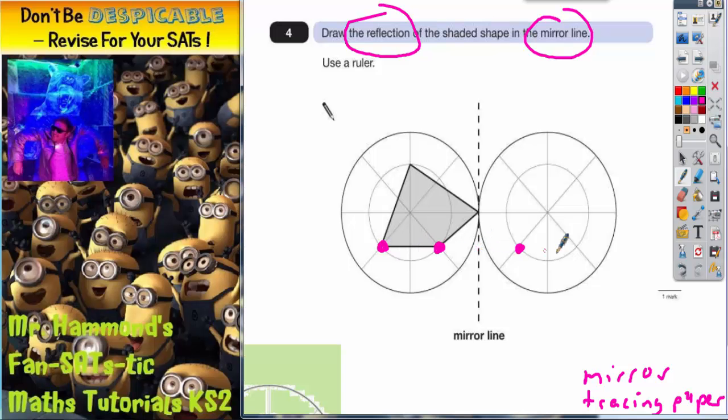Measure this distance to the mirror line and then do the same again on the other side, you'll get to there. And the only one we haven't talked about is this corner here, which is touching the mirror line. When you reflect that corner, it is still touching the mirror line. All you have to do then is very carefully join your corners up.